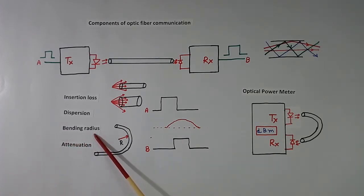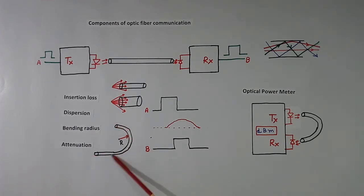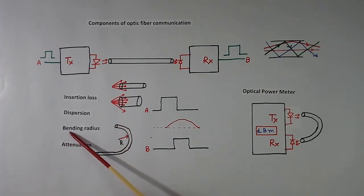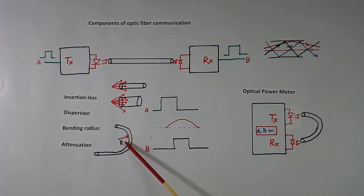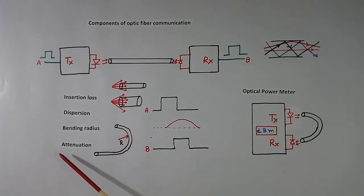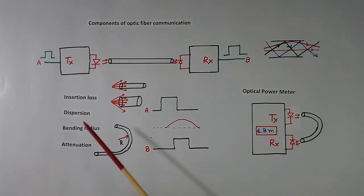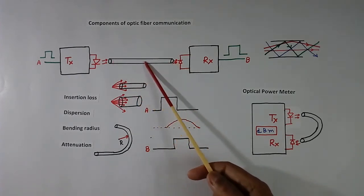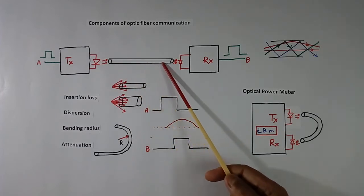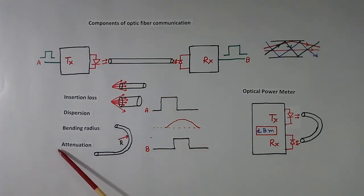Then there is bending radius. Because the cable is made of glass, bending it too much will cause it to break. Every optical cable has a minimum bending radius R — it may be 10 mm, 20 mm, or another value — and we must be careful not to exceed it. Then there is attenuation — when light enters the fiber, the full 100% does not reach the other end; there are losses inside the fiber.